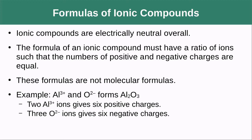Ionic compounds are overall neutral. We use this to determine the ratios between the ions. For example, aluminum with a +3 charge and oxygen with a -2 charge: one oxygen bound to aluminum leaves a +1 charge, not neutral; two oxygens give +3 and -4, which is negative. We need to find the least common multiple — two aluminums (+6) and three oxygens (-6) — to yield neutral aluminum oxide, Al2O3.